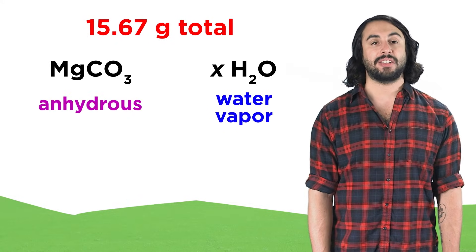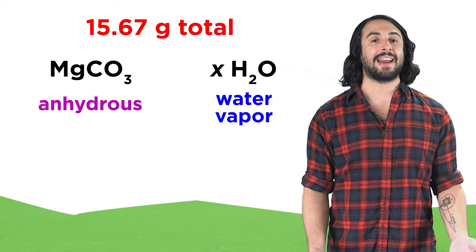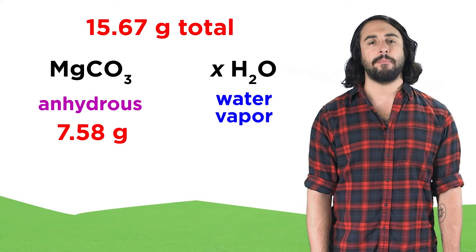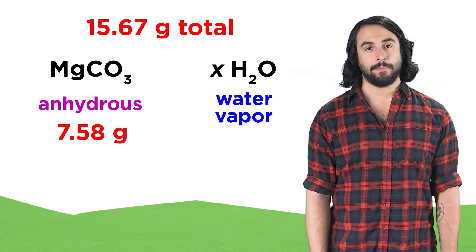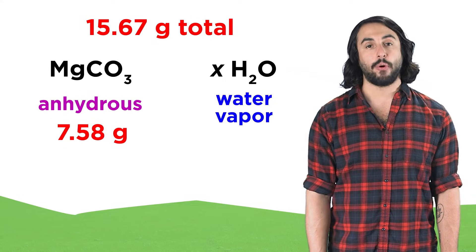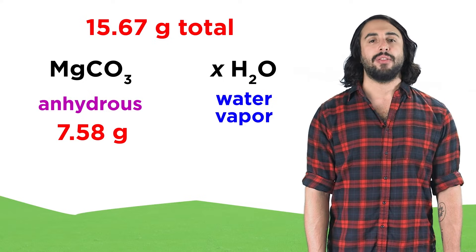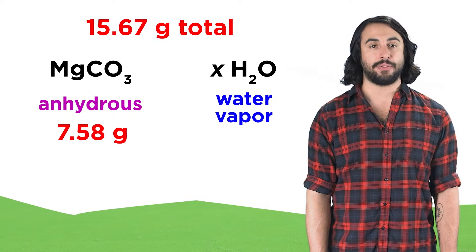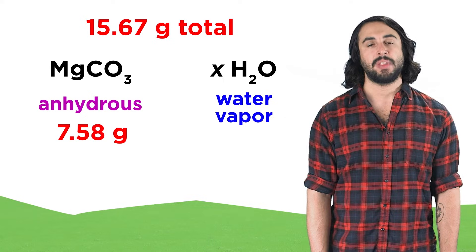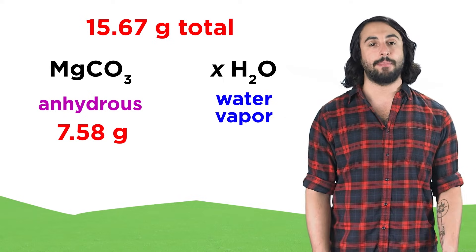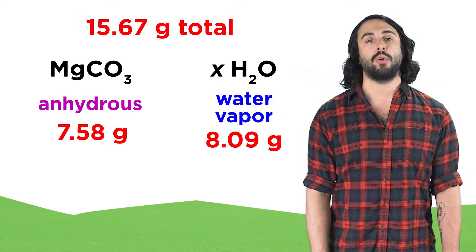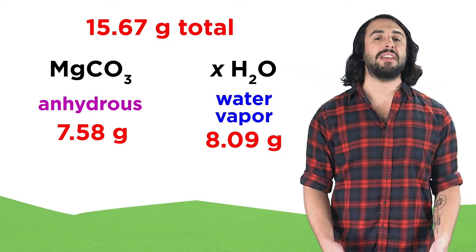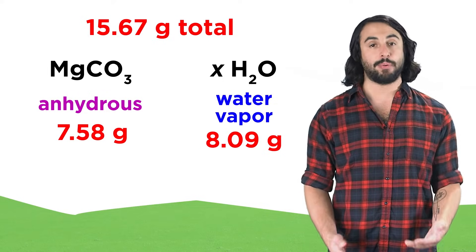Once the salt is completely dry, or anhydrous, meaning no more water is left, we measure the mass again, and this time we get 7.58 grams. That means that the dry magnesium carbonate itself must have this mass, and the difference between this number and the original mass, or 8.09 grams, must be the mass of the water that was vaporized.